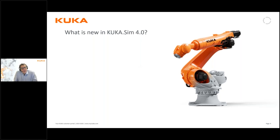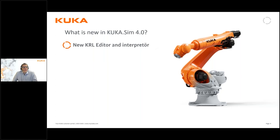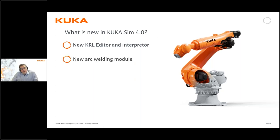Since summer 2021 we have a new version called KUKA-SIM 4.0. There is a webinar on our YouTube page describing what's new in more detail. A short summary: one of the main features is a completely new KRL editor and interpreter inside KUKA-SIM. In older versions we could not write true KUKA robot language directly in KUKA-SIM, which was a drawback. This is now fixed — we can do offline programming directly within KUKA-SIM and download the true KRL code to the robot via WorkVisual.